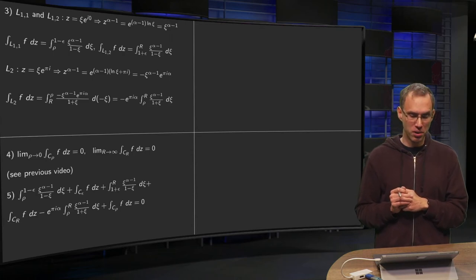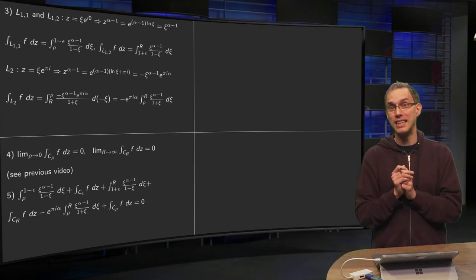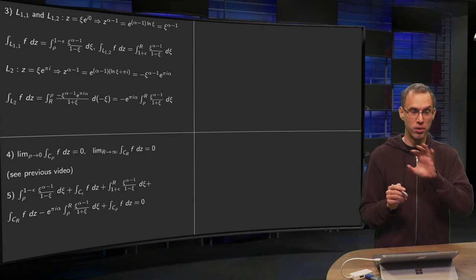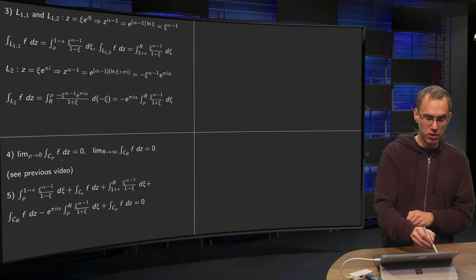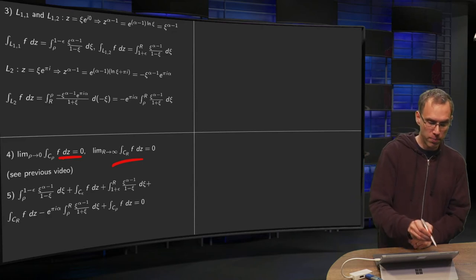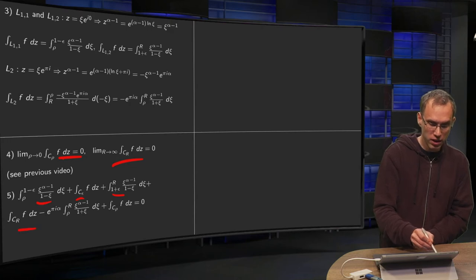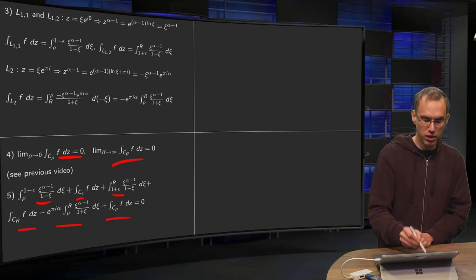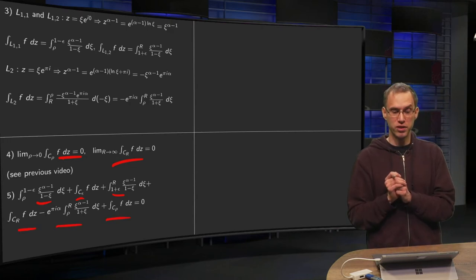Moving on to 0 and CR. You can just take exactly the same estimates as in the previous video. Won't go into that. Those are just 0 in the limit. Then wrap everything up. L11, c epsilon, L12, CR, L2, 0. Sum of those integrals equals 0.